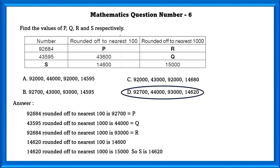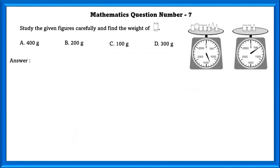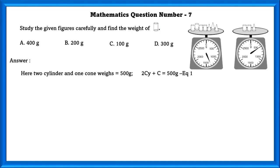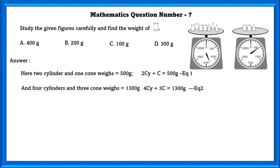D is the correct option for all of P, Q, R and S. Mathematics question number 7. Study the given figures carefully and find the weight of the cylinder. Two cylinders and one cone is equal to 500 grams, that is 2Cy plus C equals 500 grams — equation 1. Four cylinders and three cones weighs 1300 grams, that is 4Cy plus 3C equals 1300 grams — equation 2.